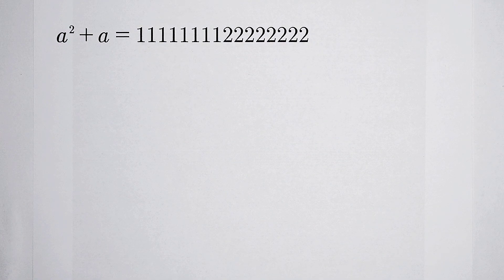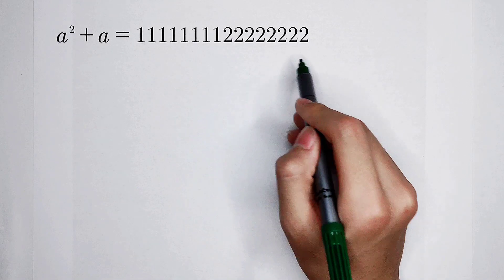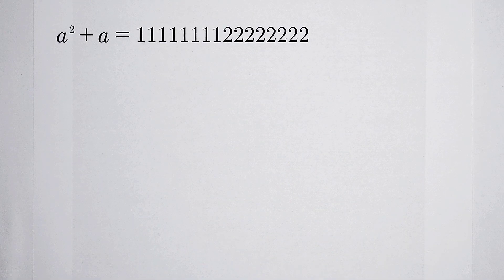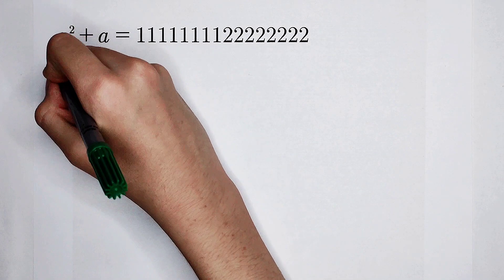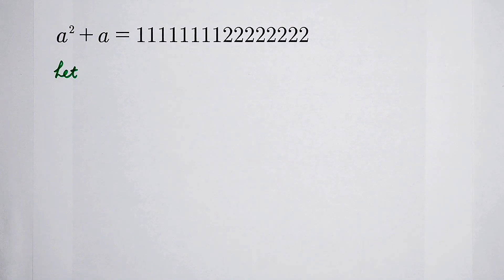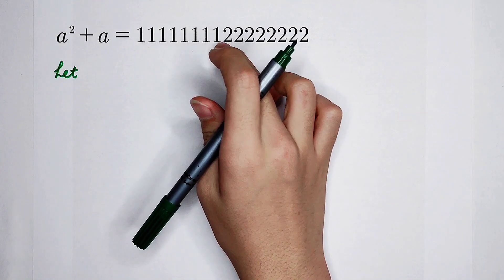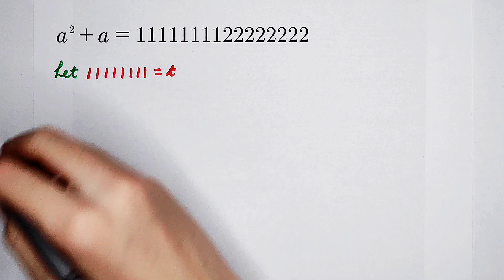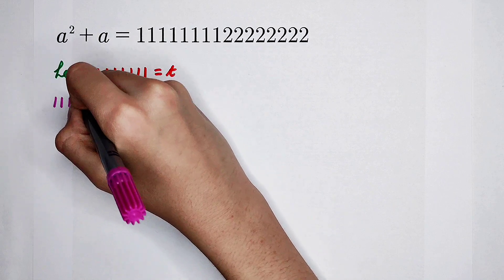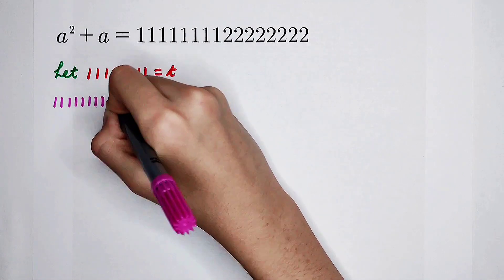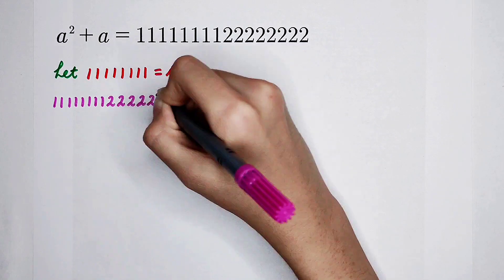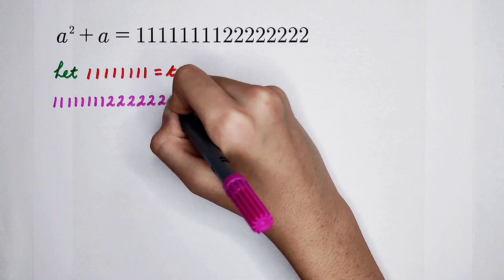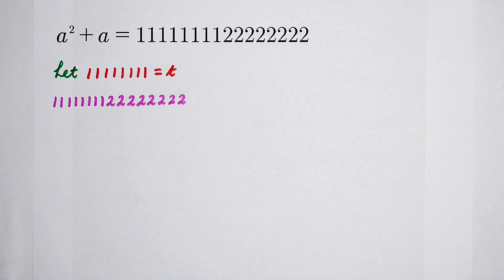We know that a×2 is 2 times a×1. Now we substitute. We can let a×1 equal t. This number on the right hand side can be written as a term of t. It is built with a×1 and a×2. I will write this number as a term of t.